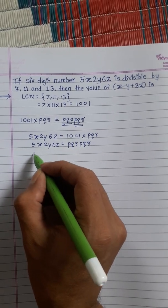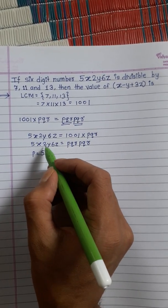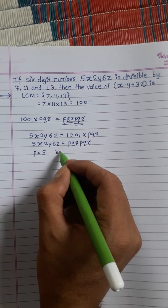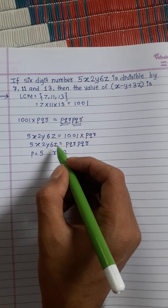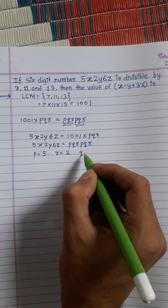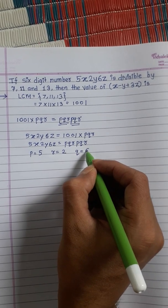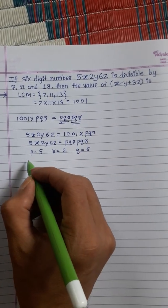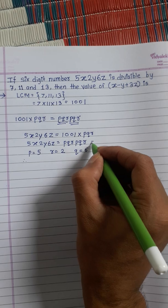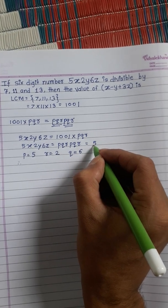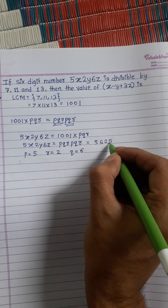The value of P is 5, the value of Q is 6, and the value of R is 2. Therefore, the number will be 562562.